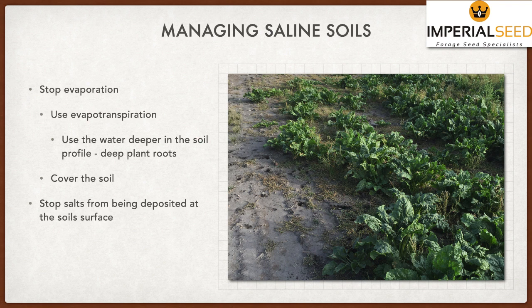With evapotranspiration, this is the evaporation of water vapor from plant leaves. The plant's roots are down in the soil, using the water before it gets to the surface to evaporate. The plant uses that water and releases it through the stomata of the leaves. When the water is used deeper in the soil, those salts are stranded in the soil. In some cases, like sugar beets, the plant will take up that salt and create a vacuole within the root cell to store it, allowing the plant to handle that high-salt soil.